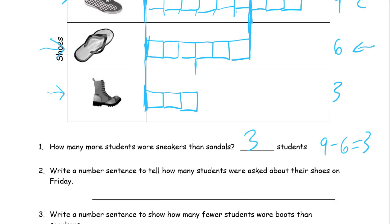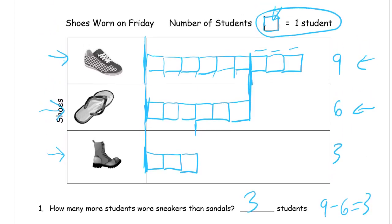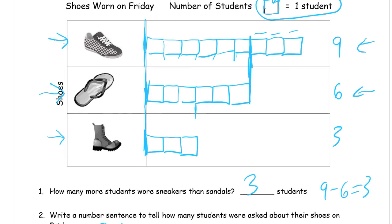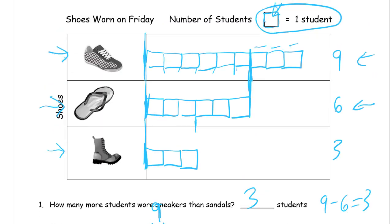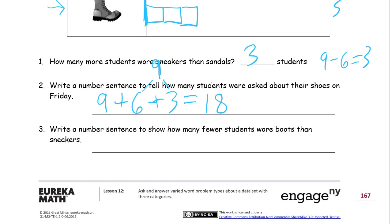Write a number sentence to tell how many students were asked about their shoes on Friday. We know nine wore sneakers, plus six who wore sandals, plus three who wore boots. If you're good with your doubles, you might see that six plus three equals nine, so you have nine plus nine. Nine plus nine is eighteen. Or you could count all the squares. The number sentence is nine plus six plus three equals eighteen — and there are other strategies that will work too.